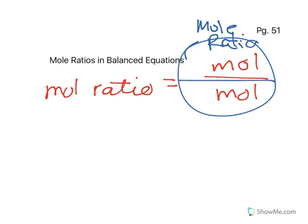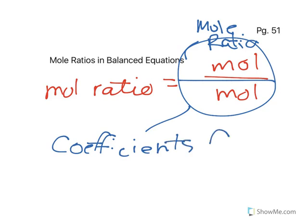So when we're setting up our grid, and we've got moles over moles, that's the only time that moles is not going to get a 1. You're going to use the coefficients from the balanced equation.